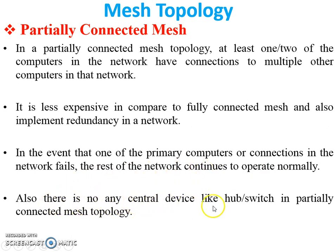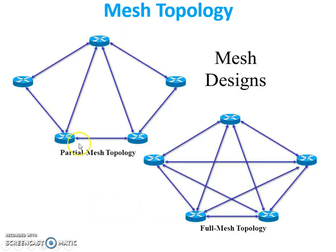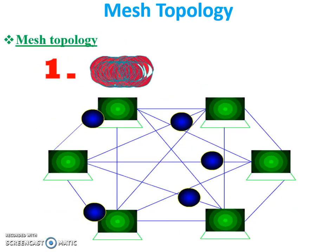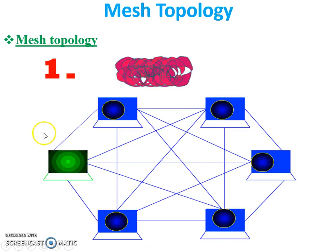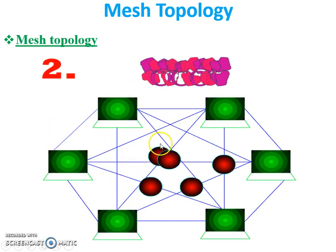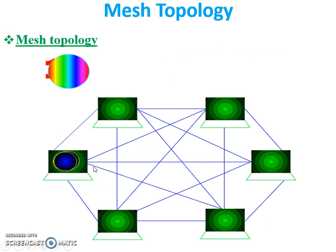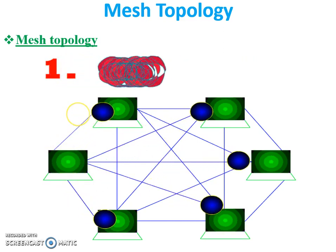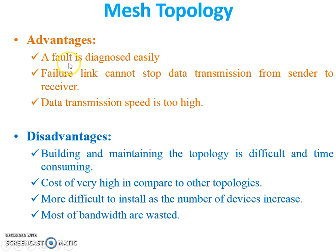There is also no central device like a hub or switch in a partially connected mesh topology. You can see here the differentiation between both types: this is fully mesh and this is partially mesh. In fully mesh, every node is connected with all other nodes — you can see the animation of fully mesh here.